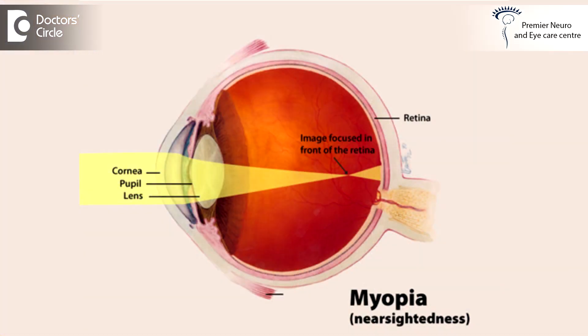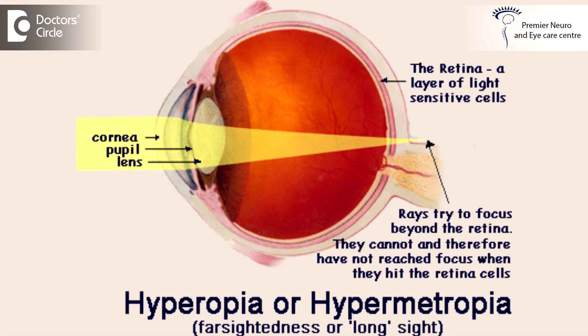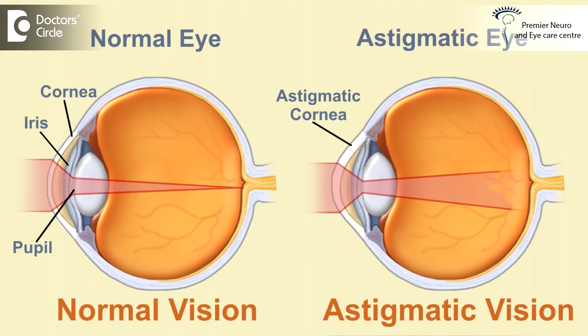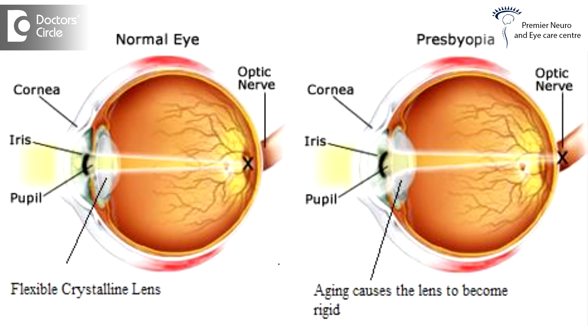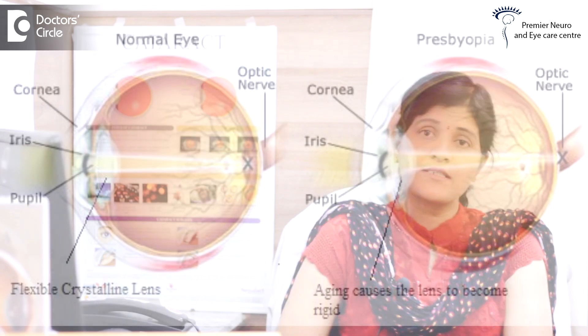LASIK was used to correct short-sightedness or myopia. It can also be used to treat hypermetropia or farsightedness, astigmatism, and now presbyopia can also be treated, including post-operative astigmatism that is induced.